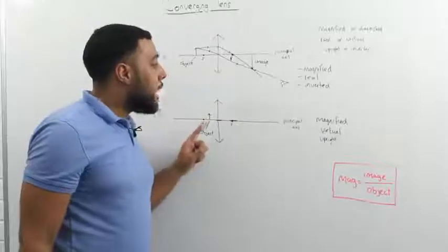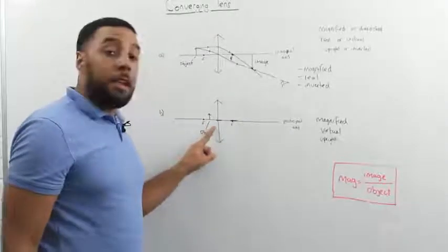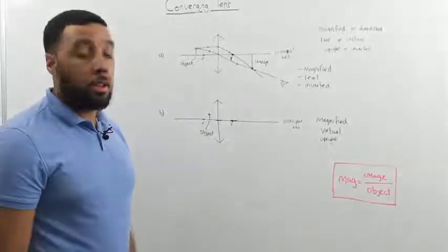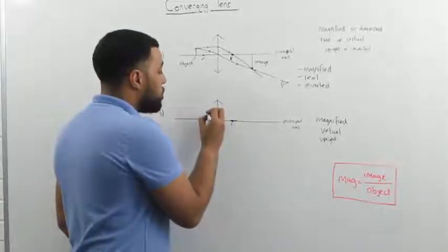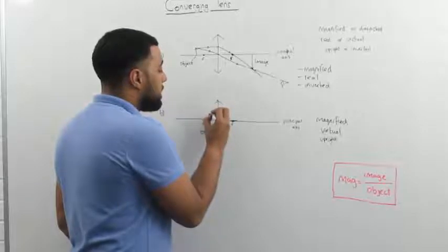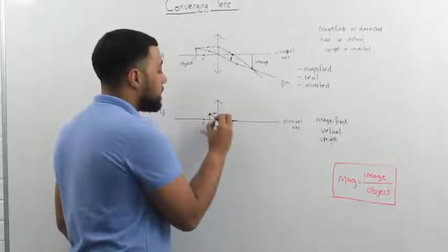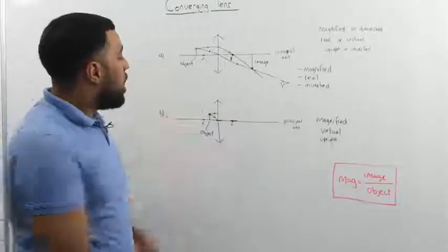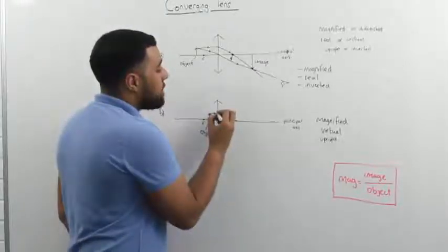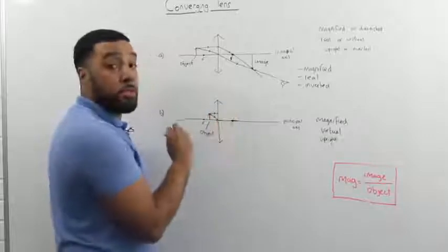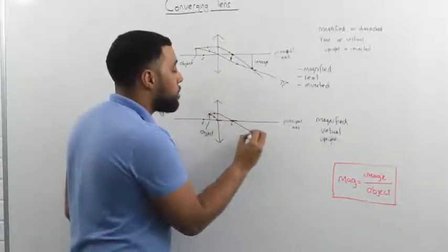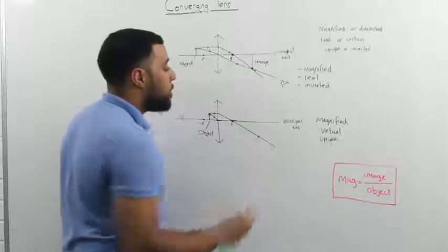Now let's see what happens if the object is placed in front of the focal point. Again, we draw two rays of light from the top of the object. Like so. The one that hits the lens parallel to the principal axis will refract and go through the focal point.